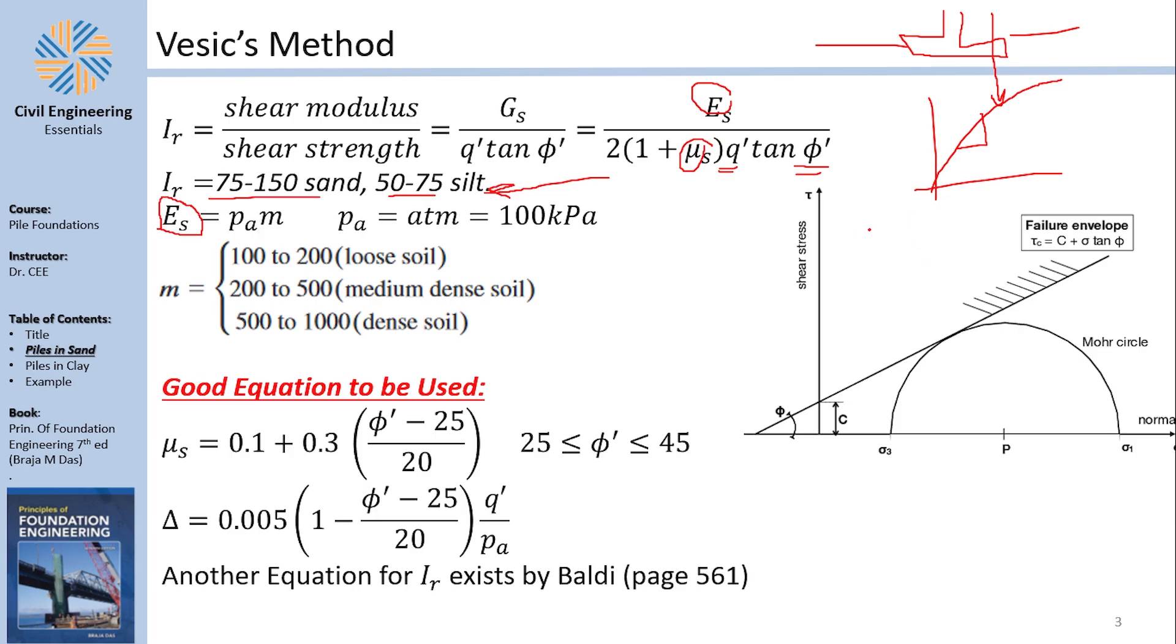Another way is to correlate the SPT, the standard penetration test number, with the elastic modulus. In the book Roger Mdas, he tells that the elastic modulus is the atmospheric pressure multiplied by a factor of M, where M has some ranges for loose soil, for dense soil, medium dense soil, and for dense soil.